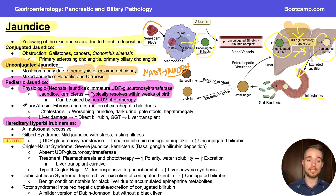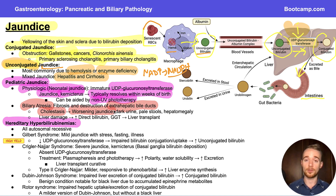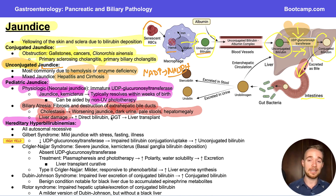A more serious form of pediatric jaundice is biliary atresia — the fibrosis and destruction of our extrahepatic bile ducts. With destruction of the biliary tree, we're going to develop cholestasis, resulting in worsening jaundice, dark urine due to increased bilirubin being filtered by the kidneys, pale stools because bile can't be excreted into the intestines, and hepatomegaly. This results in liver damage, increasing direct bilirubin as well as gamma-glutamyl transferase. A neonate with worsening jaundice, elevated gamma-glutamyl transferase, and hepatomegaly should make you think of biliary atresia, which will likely require a liver transplant.